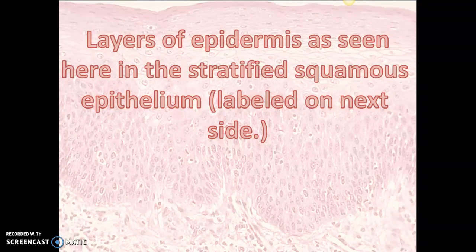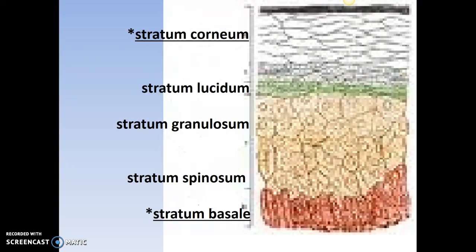Here is a nice slide of the stratified squamous epithelial layers again. Breaking it down: the stratum corneum is the top layer and the stratum basale is the base layer — the two layers to know. There are also stratum lucidum, granulosum, and spinosum, along with other layers not listed here, which will be discussed more when you get to college anatomy and physiology.